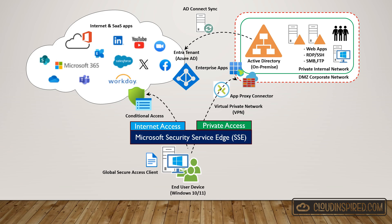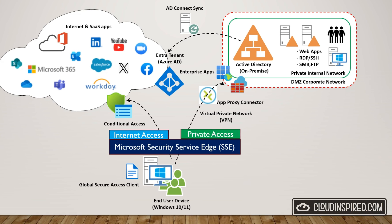With zero trust we trust no one and we give least privileged access. All identities must be authenticated, authorised and continuously validated before being granted access to company private applications and data. If you didn't catch the last video, we talk about this approach in depth and look at typical legacy network security approaches with office environments in the cloud and the need for this change — to keep up with our flexible and modern ways of working with digital transformation. The link to that video is in the description.